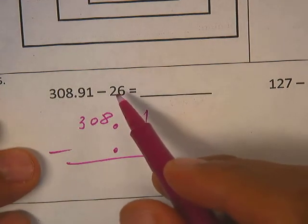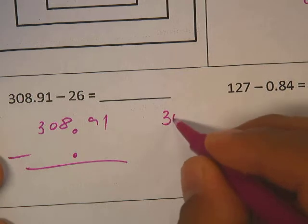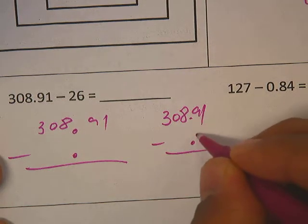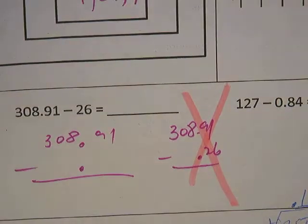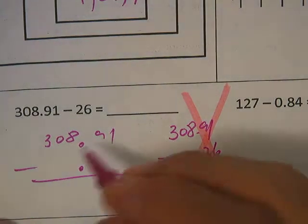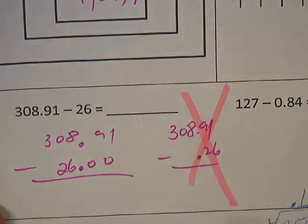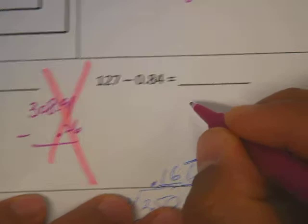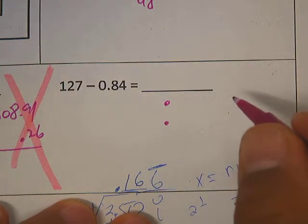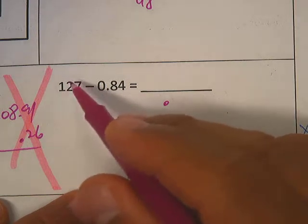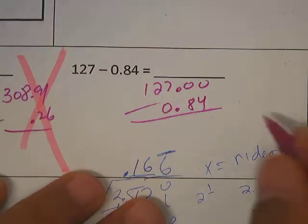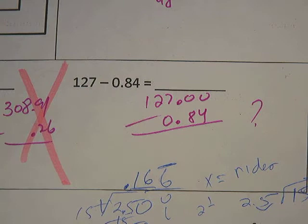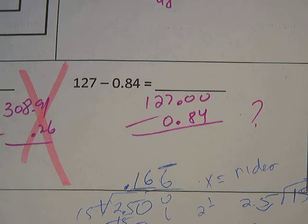And this one here — subtraction. Some of you still don't know how to subtract decimals. The first thing you do is line up the decimals. Where does the decimal end on a whole number? Some of you still want to do it the wrong way — you do that and you're going to get the wrong answer. This is a no-no, don't do that. It's a whole number, so it goes on the right side, and just subtract. Then this one over here: line up the decimals first. Which one is bigger? The whole number goes over here, and then 0.84 — just subtract and you get the answer.